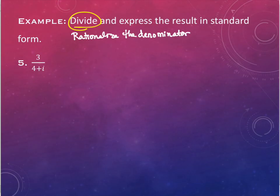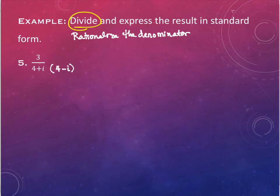So when I look at 3 over 4 plus i, I have an i in the denominator and I don't want it there. So I'm going to multiply by the conjugate of my current denominator. What is the conjugate of this denominator? 4 minus i.